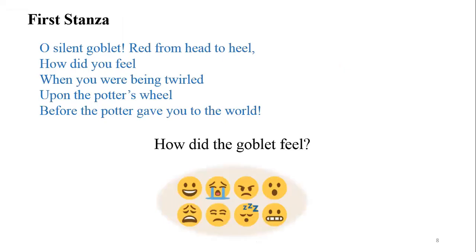Looking at the first stanza: 'O silent goblet, from right from head to heel, how did you feel when you were being twirled upon the potter's wheel before the potter gave you to the world?' Here we have a question — 'How did you feel?' The writer talks to the goblet and asks a very powerful question, starting a dramatization.